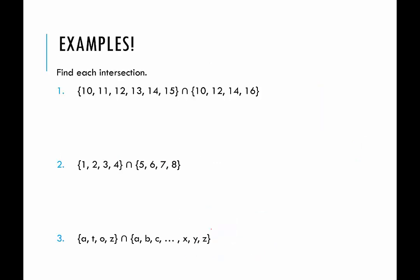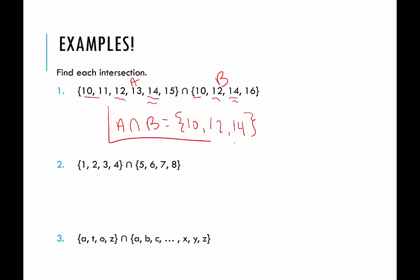Just some examples to make sure we really have the intersection down. I'm going to call this one A and this one B. A intersect B — we have 10 in both, 12 is in both, 14 is in both, and that's it because B doesn't have any odd numbers, and A doesn't have the number 16. So the intersection includes the elements 10, 12, and 14.